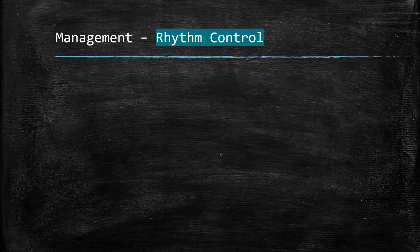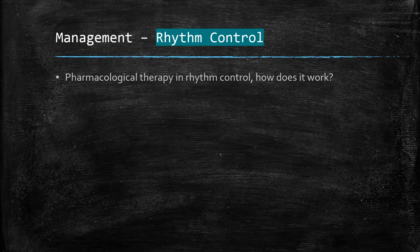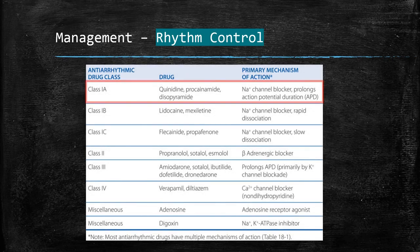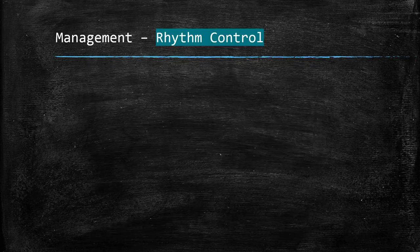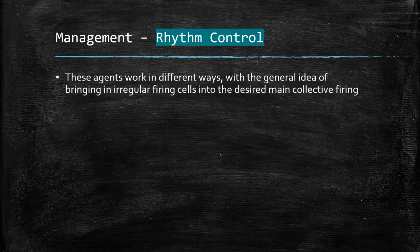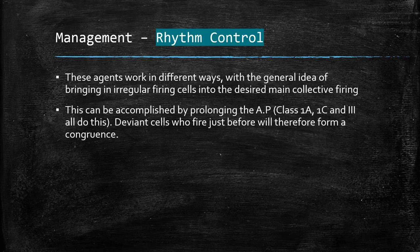A useful point to understand is that the aim of pharmacological therapy — such as class 1A, 1C, and 3 drugs — in rhythm control is to prolong the action potential. The general idea of a delayed action potential is bringing more irregular fibrillation cells into the desired main collective rhythm, similar to a school bus waiting longer for those late students.